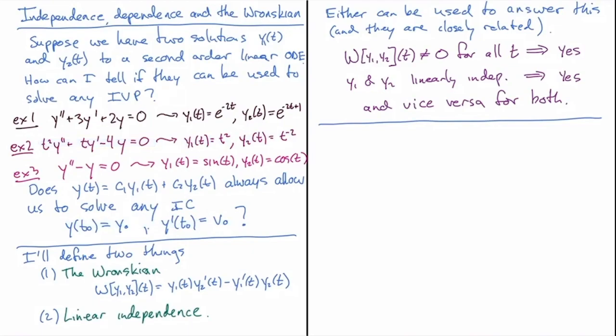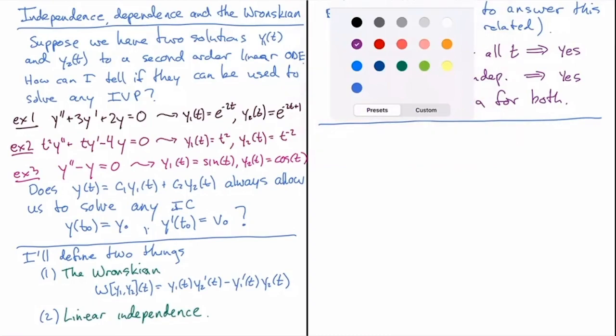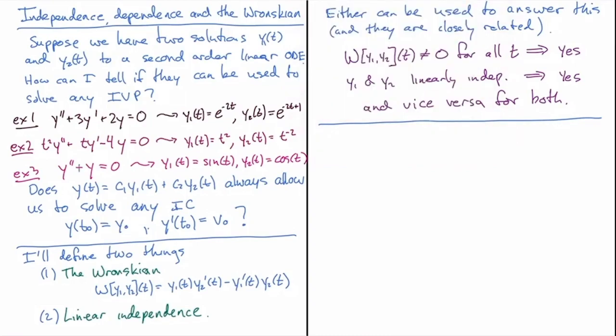We need a method to determine that. And finally, y'' + y = 0 has two solutions: cosine t and sine t. Which of these pairs work as a general solution when combined in that way?